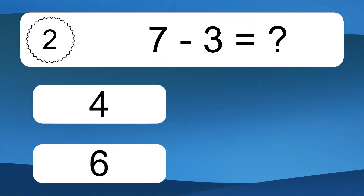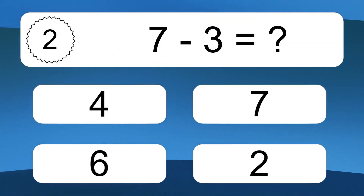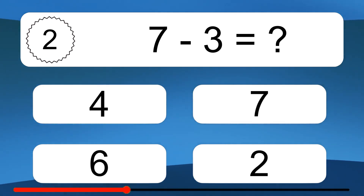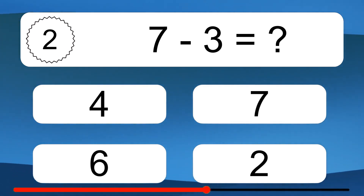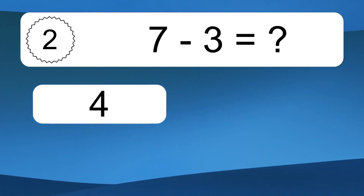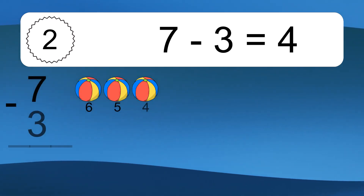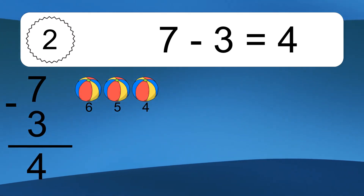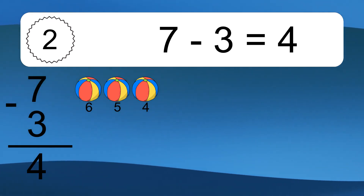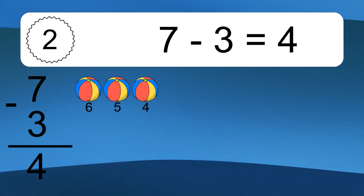7 minus 3 equals what? 7 minus 3 equals 4. Let's count it: 6, 5, 4.